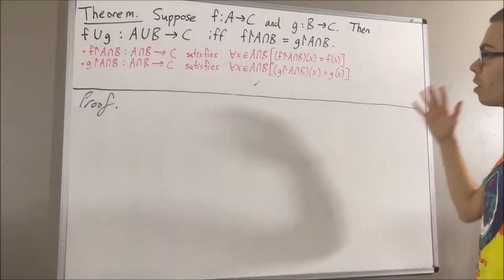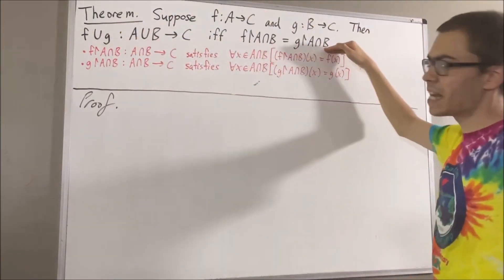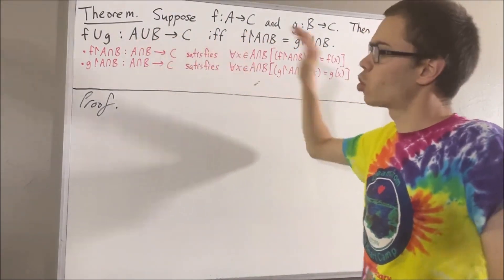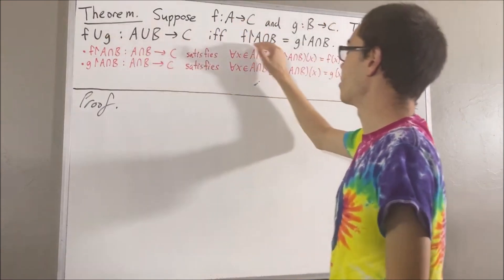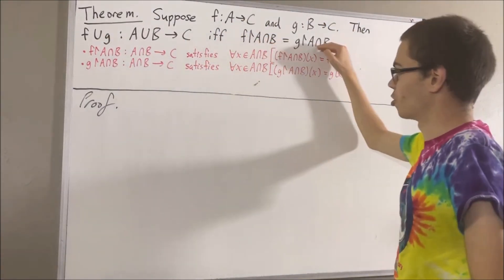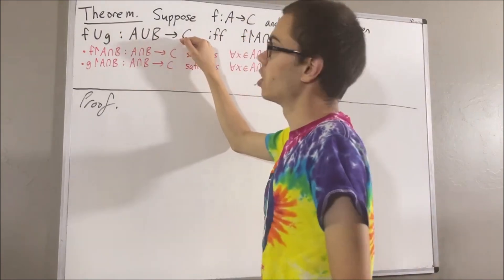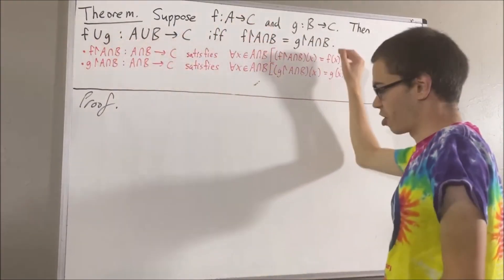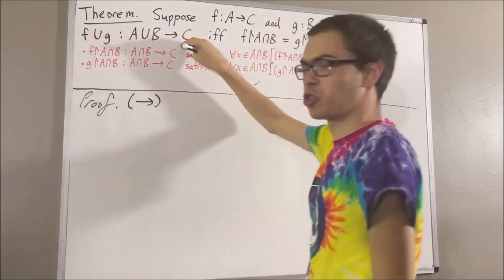Now we want to prove this statement, and this is a statement containing if and only if. So what we're going to do is prove: if the union of f and g is a function, then the restrictions are equal; and then prove if the restrictions are equal, then the union is a function. Let's start by proving the forward direction — suppose the union of f and g is a function from A∪B to C.